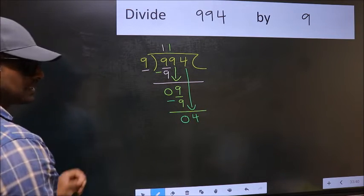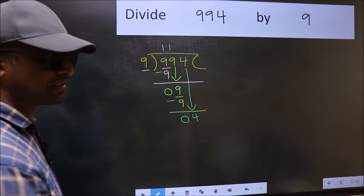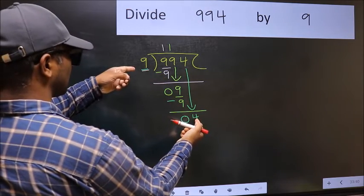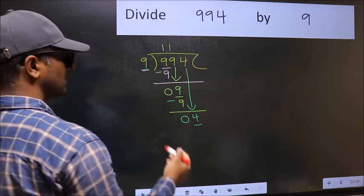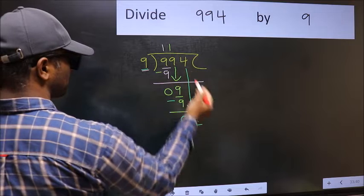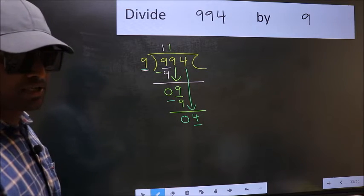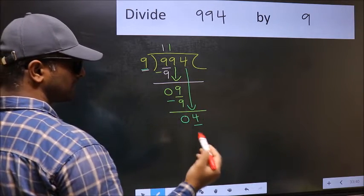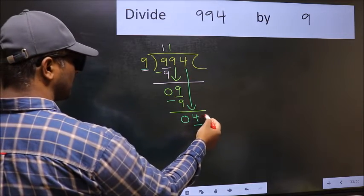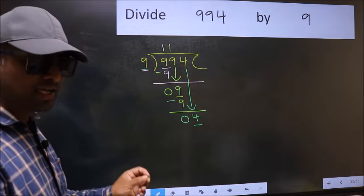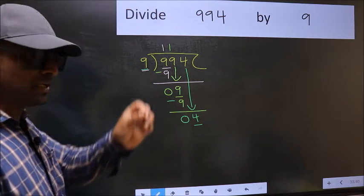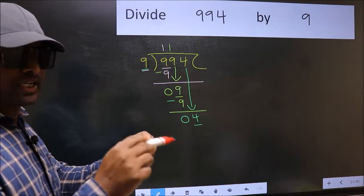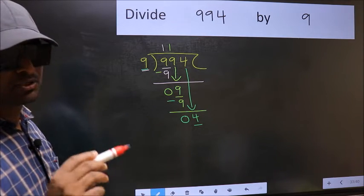After this step, the mistake happens. Here we have 4 and here 9. 4 is smaller than 9, so what many do is they directly put a dot and take 0, which is wrong. Why is it wrong? Because just now you brought this number down, and in the same step you want to put dot and take 0 — bringing the number down and putting dot, taking 0 both at the same step. You should not do that.